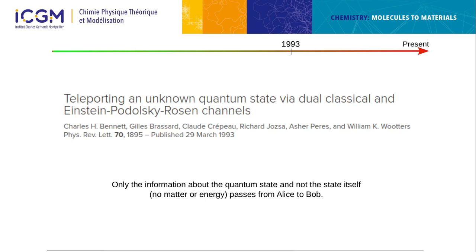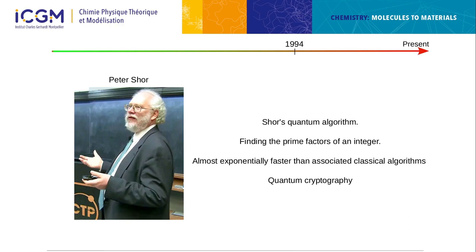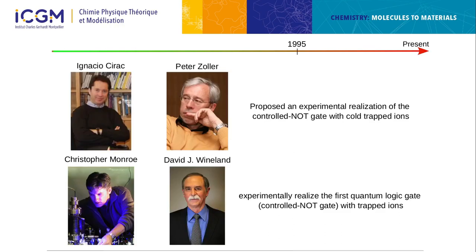Another interesting development was quantum teleportation — where information of a quantum state can be teleported from one person to another, but it's not teleportation of matter or energy, just information. Peter Shor developed the famous Shor's algorithm to find prime factors of an integer, which is exponentially faster than classical algorithms. This is very relevant to quantum cryptography — potentially allowing hackers to break codes — though we are not there yet experimentally.